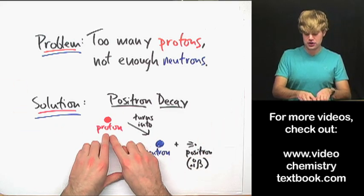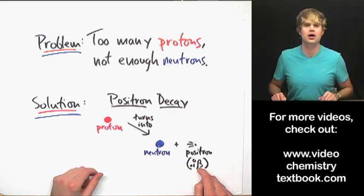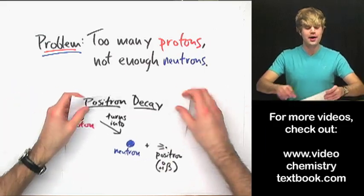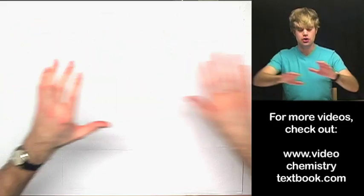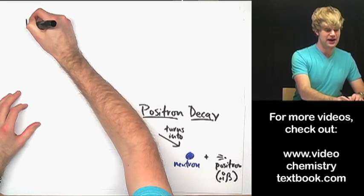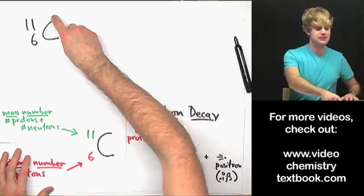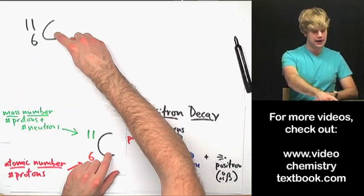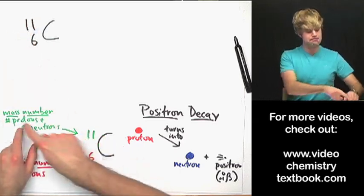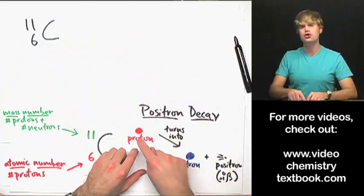So positron decay: a proton turns into a neutron and creates a positively charged electron called a positron in the process. Now I want to go through writing nuclear reactions for positron decay. Let's say we have an atom of carbon-11. Whenever I do these decay problems, I write the atoms in isotope notation. We've got the element symbol for carbon, and then two numbers: the atomic number down here is the number of protons, and the mass number up here is the number of protons plus neutrons. It lets us keep track of these things as they change during decay processes.